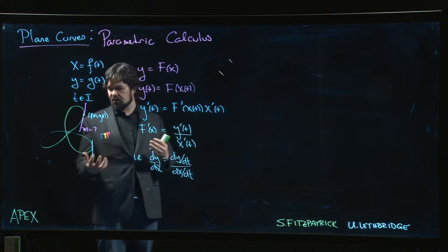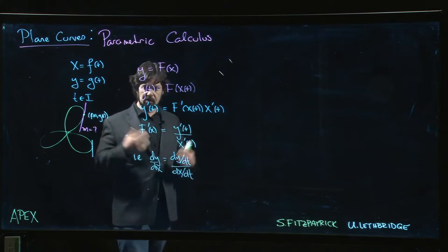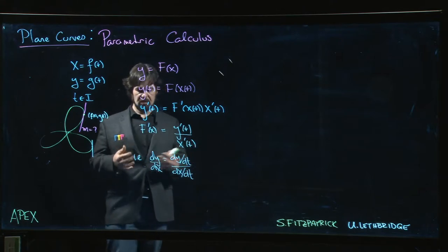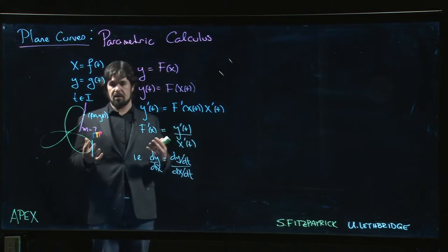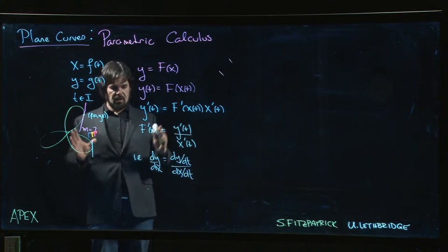And so now this all starts fitting together a little bit better. If y' is zero, that should be a horizontal tangent. If x' is zero, that should be a vertical tangent. You can start getting actually a little bit better understanding of how curves work once you get into parametric calculus.